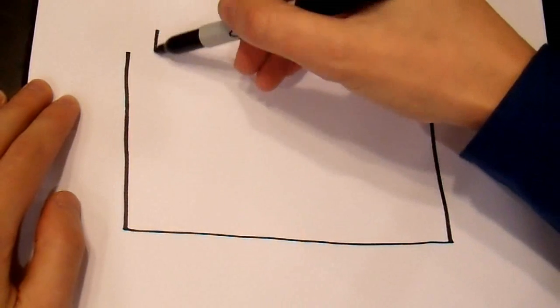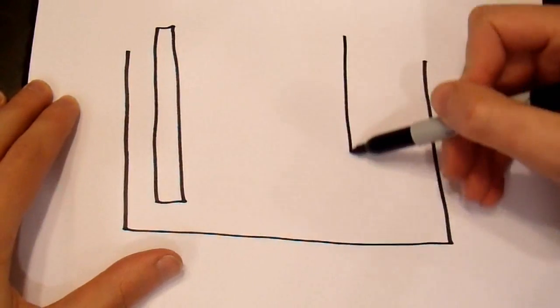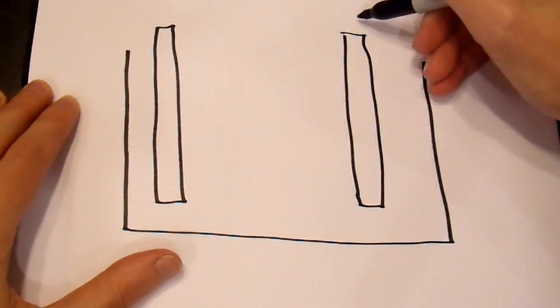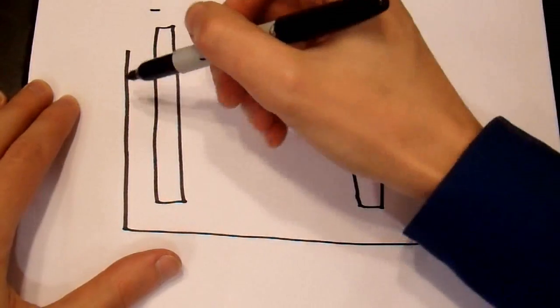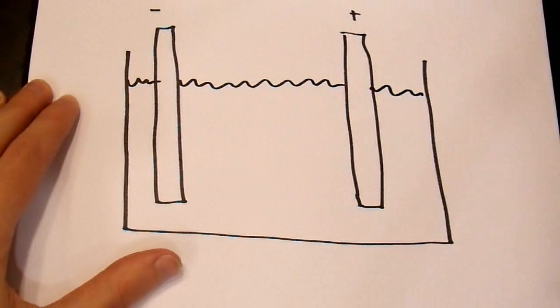There's a bunch of acid, and we have some lead over here that sticks out the top, and some lead over here that sticks out the top. And we're just going to call this one positive, and this one negative. And then there's some acid in here.